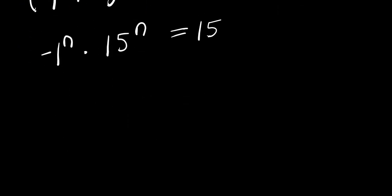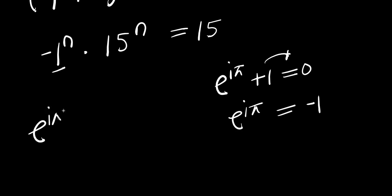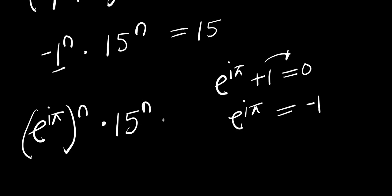From here, what I can do will be to apply this identity: if you have e to the power of i times pi plus 1, this equals 0, which means e to the power of i times pi equals negative 1. So we can replace this negative 1 here with e to the power of i times pi, raised to the power of n, times 15 to the power of n equals 15.